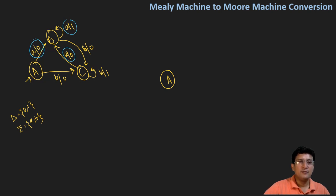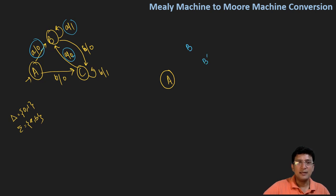So there is a conflict: we have two outputs, and two outputs cannot be associated with a single state. Hence, I will have to consider two B states — one state is B and one state is B dash. On B, let's say zero is associated with the output, and on B dash, let's say one is associated with the output.